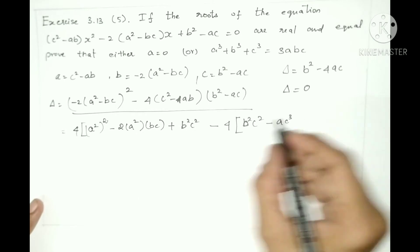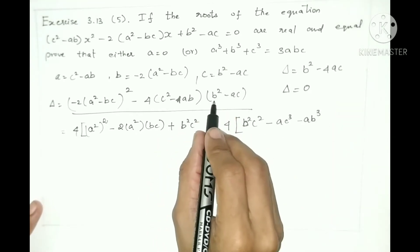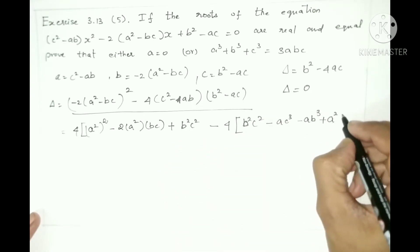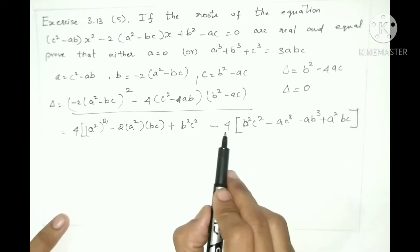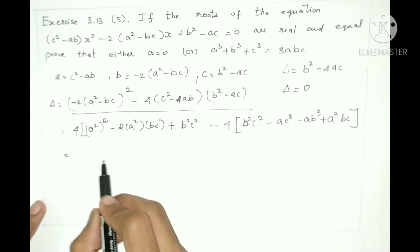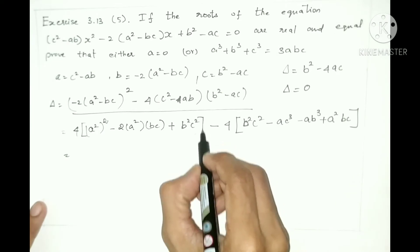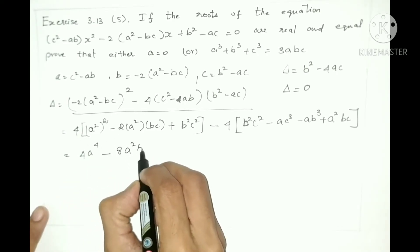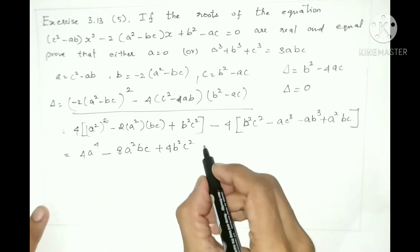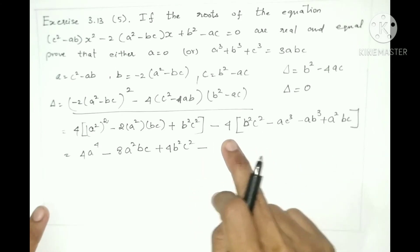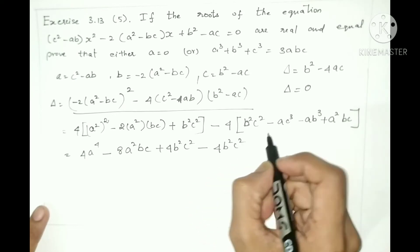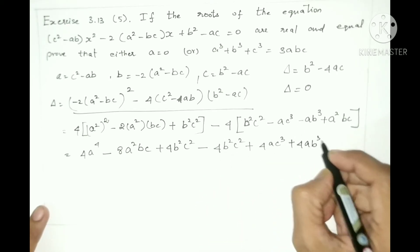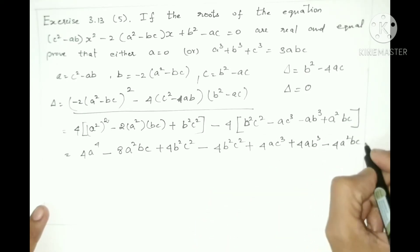After expanding, the full expression gives: 4a to the power 4, minus 8a squared bc, plus 4b squared c squared, minus 4b squared c squared, plus 4ac cubed, plus 4ab cubed, minus 4a squared bc. So collecting all terms, the b squared c squared terms cancel out — plus 4 and minus 4 cancel.